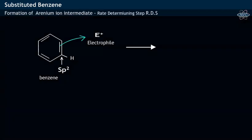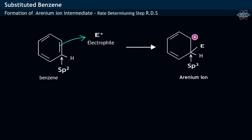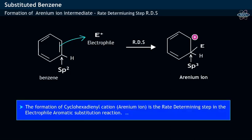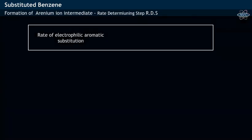The formation of the arinium ion, as shown, is the rate-determining step in the electrophilic aromatic substitution reaction. Since it is the rate-determining step, the rate of electrophilic aromatic substitution is directly proportional to the stability of the arinium ion.